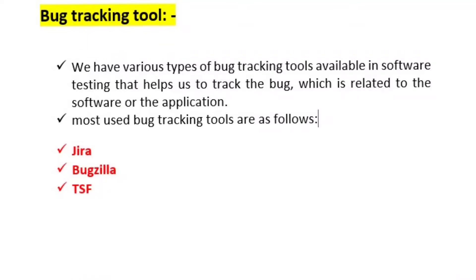If you don't know the bug tracking tool, we need to create issues. For example, if the login page is not working, that is the problem. We need to know the URL, add details, description, and submit. We attach evidence and assign it to a developer — a notification is sent. We then monitor the issues, and if not fixed we reopen it; once resolved we close it. This is the process in a bug tracking tool.